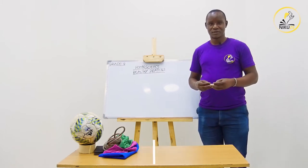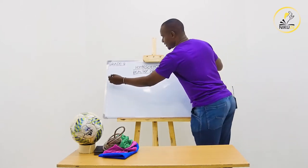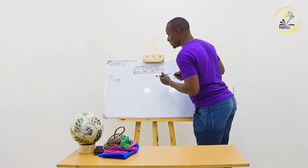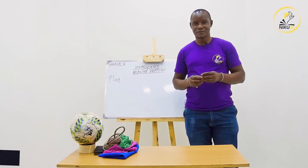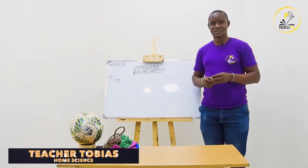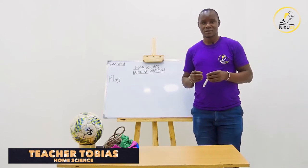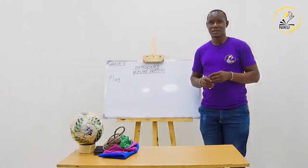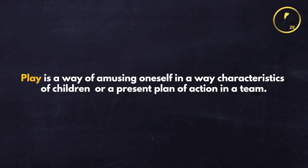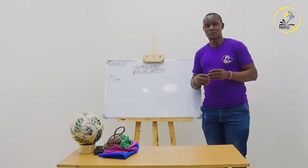One of the things we are going to talk about is play. This is a common thing that we normally do in day-to-day activity, but we don't always know what it entails. We think playing is a normal thing, but in real sense it is practiced to ensure that the body is actively involved. Play is a way of amusing oneself — a characteristic of children — and is also part of a child's growth and development.